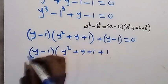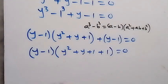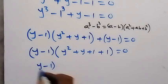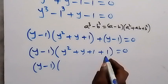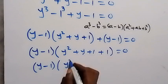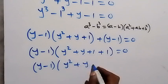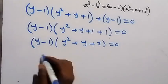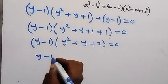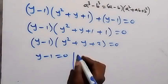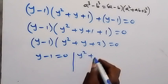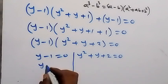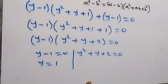Factoring out y minus 1, we have y minus 1 times the bracket y squared plus y plus 1 plus 1. Adding 1 plus 1 gives 2, so we get y minus 1 times y squared plus y plus 2 equals to 0. This gives two possible cases: y minus 1 equals to 0, or y squared plus y plus 2 equals to 0.